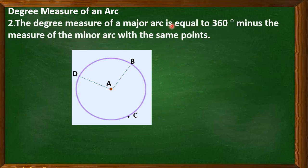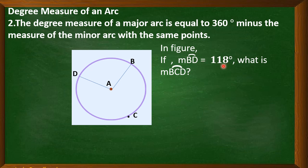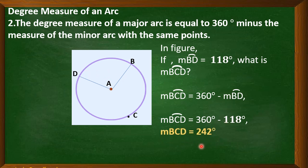Next, the degree measure of a major arc is equal to 360 degrees minus the measure of the minor arc with the same endpoints. We have here a figure. In the given figure, measure of arc BD is equal to 118 degrees. What is the measure of arc BCD? The measure of arc BCD is this arc here, B, C, D. To get the measure of arc BCD, we have the measure of arc BCD, which is the major arc, is equal to 360 degrees minus the measure of arc BD. By substitution, we have 360 degrees minus the measure of arc BD. Therefore, measure of arc BCD is equal to 242 degrees.